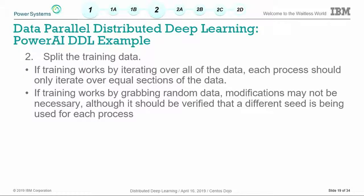The next step is to split the training data. If your training iterates through every element in your dataset repeatedly — an epoch — then you need to split your data so each GPU sees a different set. Otherwise they do the same training, and averaging their gradients means averaging the same values. However, for networks that randomly augment and sample from their dataset on the fly, you don't actually have to split the data as long as you have different seeds on each GPU — the same seed means you're back to using the same data on each network.